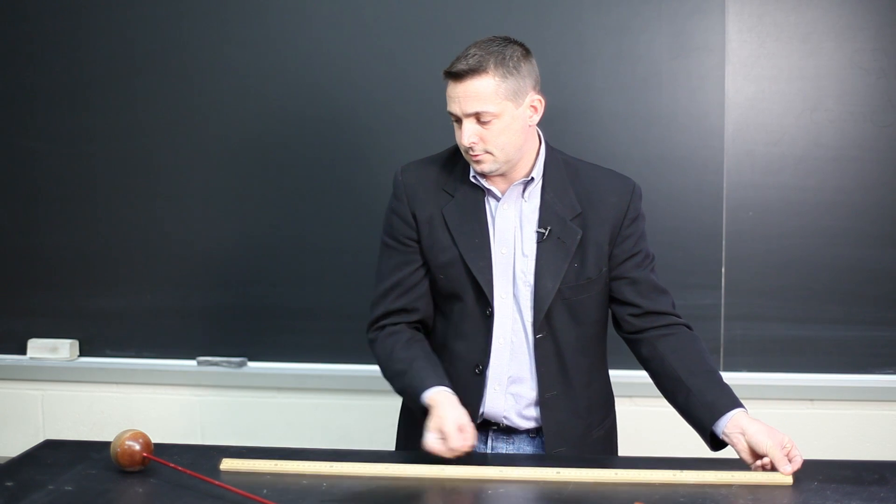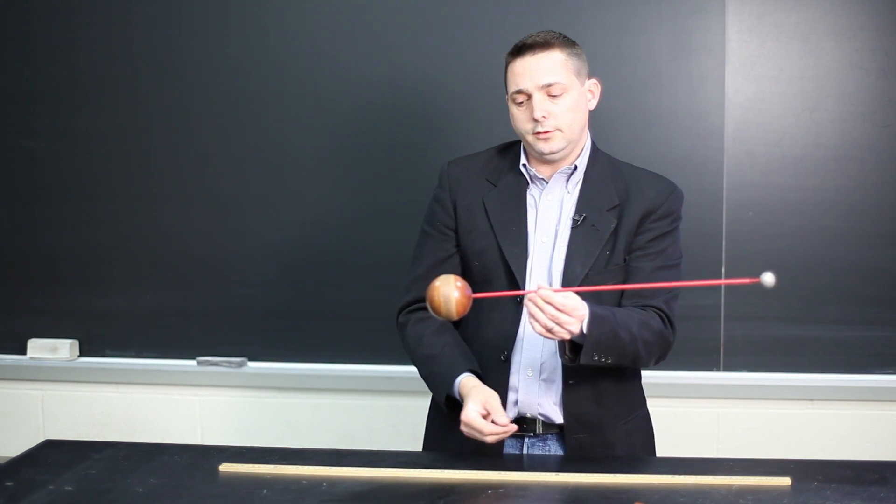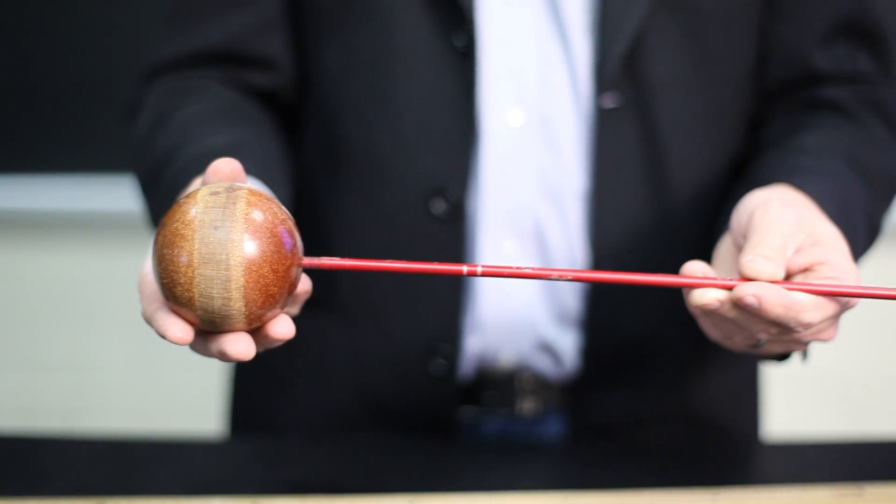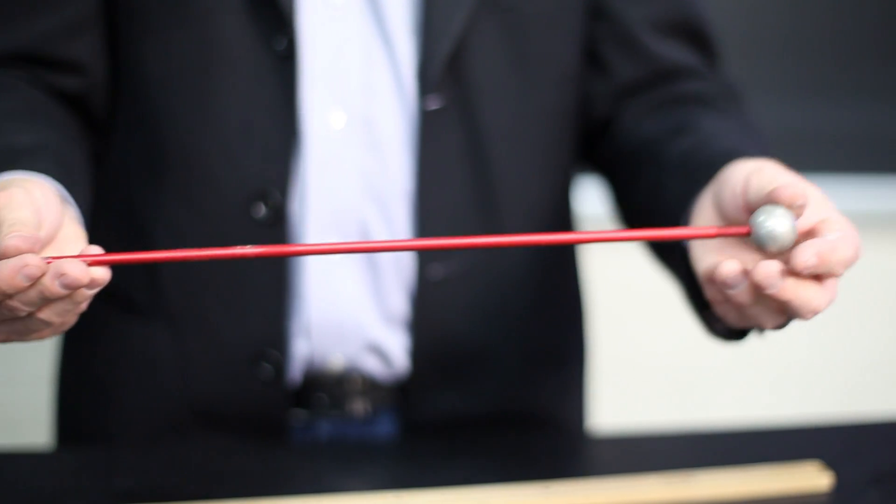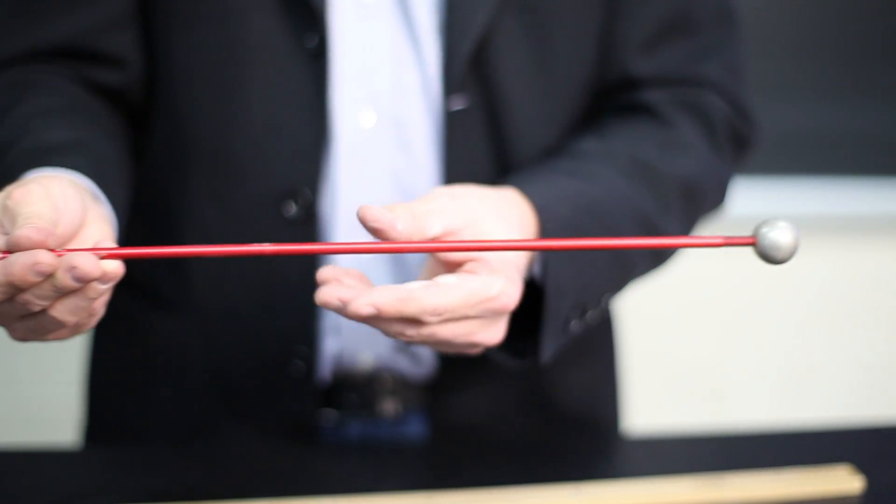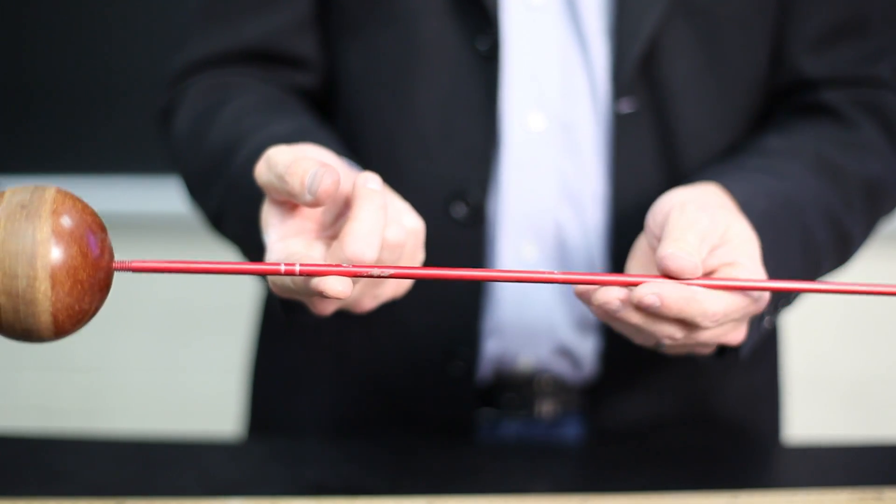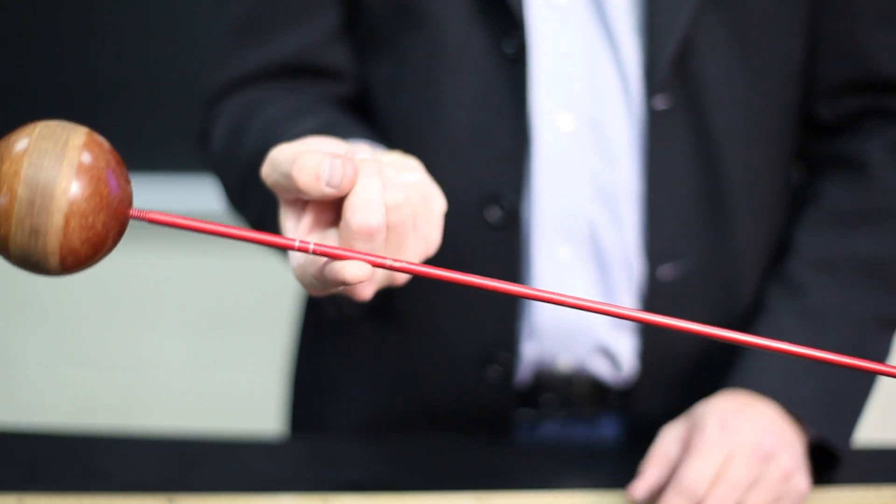So moving from a meter stick to this, where I have unequal masses, a heavy mass on one side and a much lighter mass on the other, the center of mass is now located closer towards the larger sphere. As a result, I must balance it closer to the larger sphere.